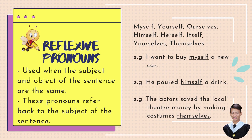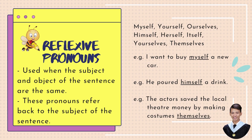Example number two: He poured himself a drink — he, himself. So the underlined word 'himself' is a reflexive pronoun. Third example: The actors saved the local theater money by making costumes themselves. The actors, or 'they' — themselves. So 'themselves' is our reflexive pronoun.